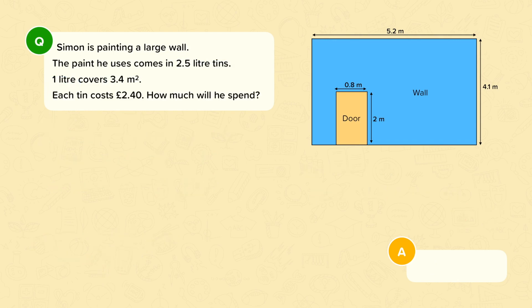Now finally here is another question that could be asked with this same example. Now all the information in the question is the same but instead of asking how many tins we're given this extra line of information. So we're told that each tin costs £2.40 and we want to know how much Simon will spend. So we would do exactly the same thing as before. So start by working out the area of the wall that needs to be painted, which is the area of the wall minus the area of the door. So that was 19.72 meters squared.